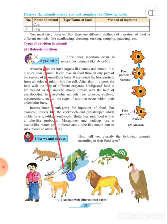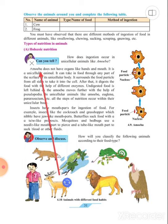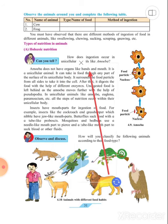Type of nutrition in animals: holozoic nutrition. Can you tell how does ingestion occur in a unicellular animal like amoeba? How does ingestion happen in amoeba, which is a unicellular organism?